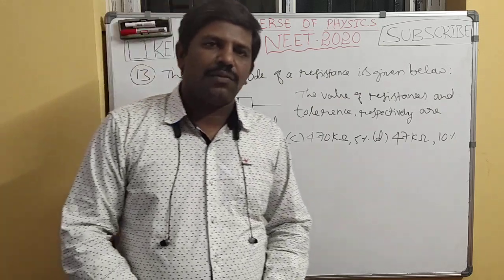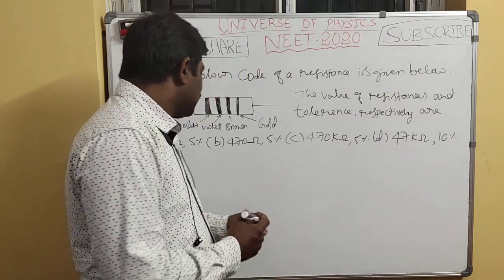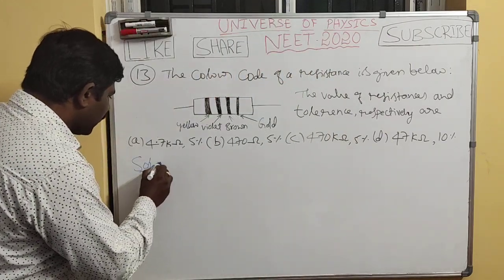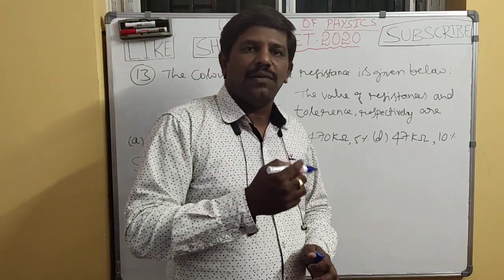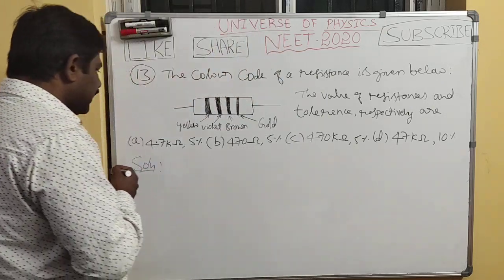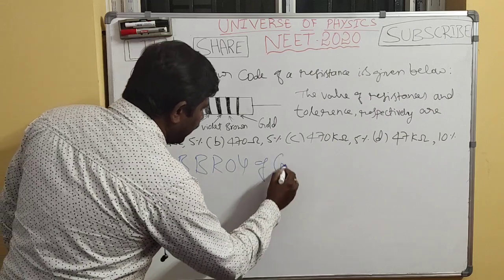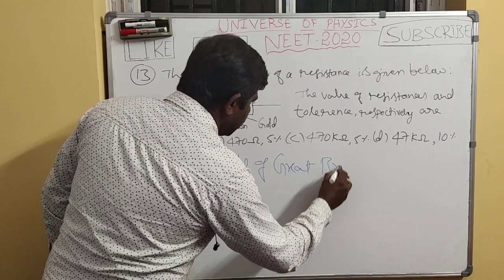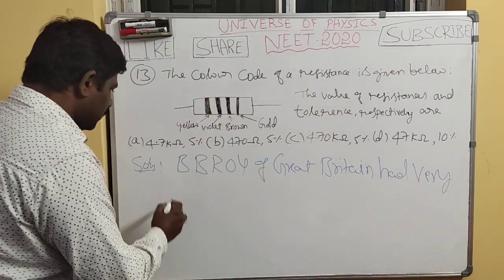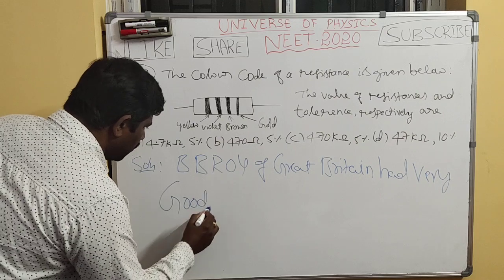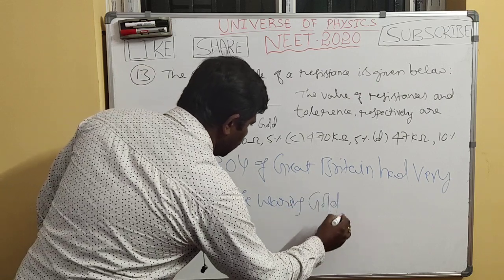To write the value of any given carbon resistor, we have to recall a sentence. By knowing this sentence we can easily write the resistance value. That sentence is: BB Roy of Great Britain had a very good wife wearing a very good silver gold necklace.